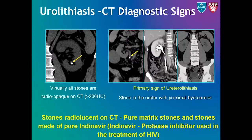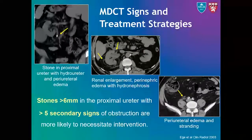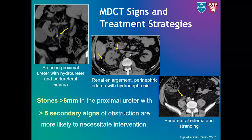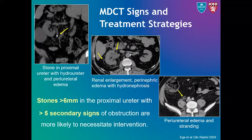Coming to ureteral stones, in addition to direct visualization of hyperdense stones, their identification in the ureter is often facilitated by secondary features such as upstream hydro-ureter or hydronephrosis. The most reliable secondary signs of obstruction include hydro-ureter, hydronephrosis, perinephric stranding, periureteral edema, and unilateral renal enlargement. It is important to remember that the absence of hydronephrosis or hydro-ureter does not indicate absence of obstruction. When five or more secondary signs of obstruction are present in proximal ureteral stones greater than 6 mm, it usually indicates that the patient likely needs some sort of intervention for removal of stones.